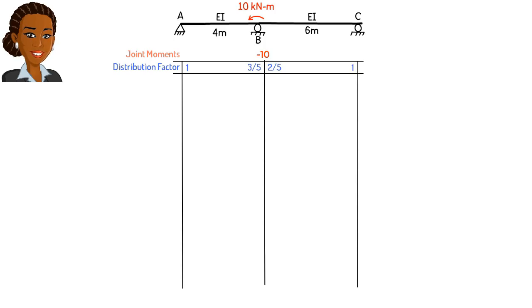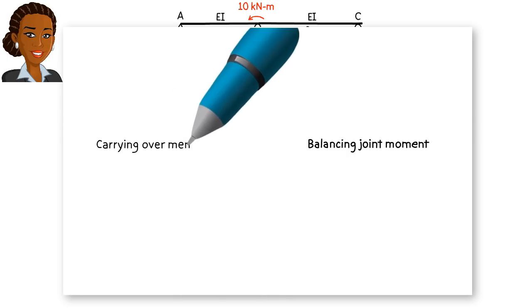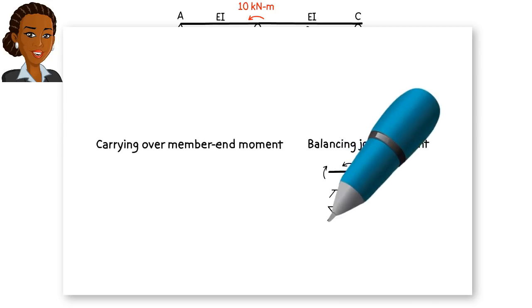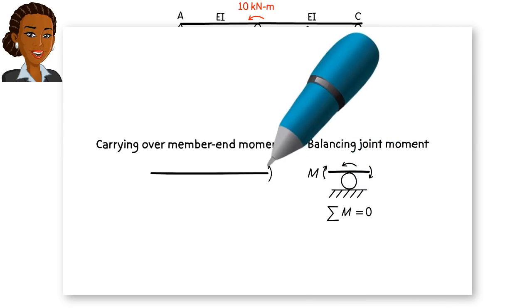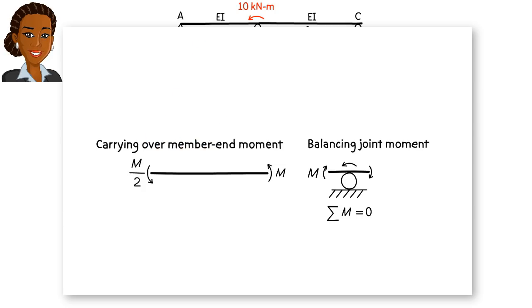Now we are ready to proceed with the iterative process of the moment distribution method. There are two basic steps in this process: balancing joint moments and carrying over member end moments. In the balancing step, we make sure the sum of the moments at each joint adds up to zero. In the carryover step, we distribute half of any moment added to one end of a member to its other end. So, if an outcome of the balancing step is the addition of bending moment M to the table, then in the carryover step, we place half of M at the other end of the member.